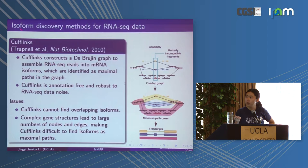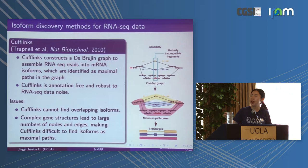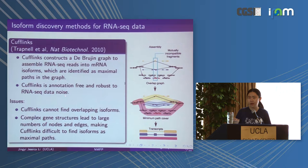In the isoform discovery field for RNA-seq data, the most commonly used method is Cufflinks. This method constructs a de Bruijn graph to assemble RNA-seq reads into mRNA isoforms, identified as maximal paths in the graph. Paired-end reads are nodes, edges indicate compatibility and overlap between reads, and the goal is to find the minimum number of maximal paths to explain the reads. An advantage of Cufflinks is that it is annotation-free and robust to RNA-seq data noise because it aims for sparse solutions.